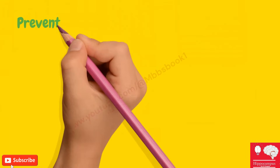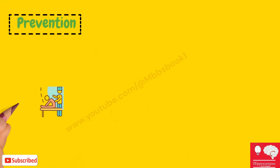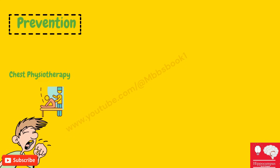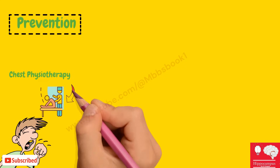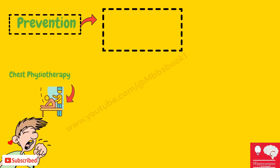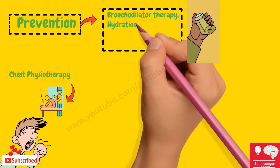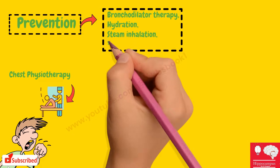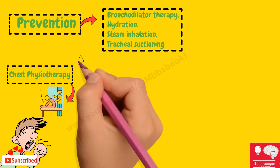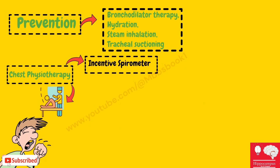To prevent atelectasis, we need to make sure that the patient does chest physiotherapy and coughing. We make the patient sit up and pat on the patient's back. We can also give bronchodilator therapy, hydration, steam inhalation, and tracheal suctioning.